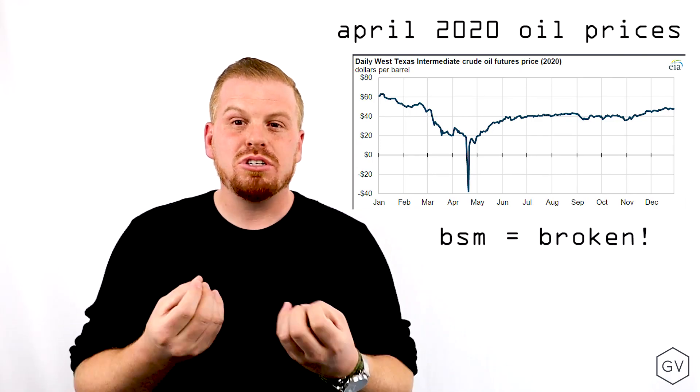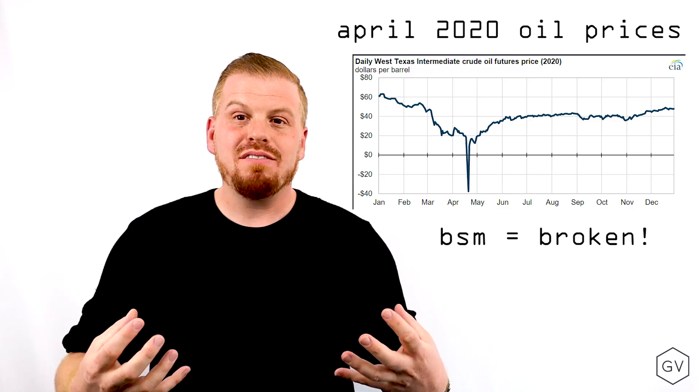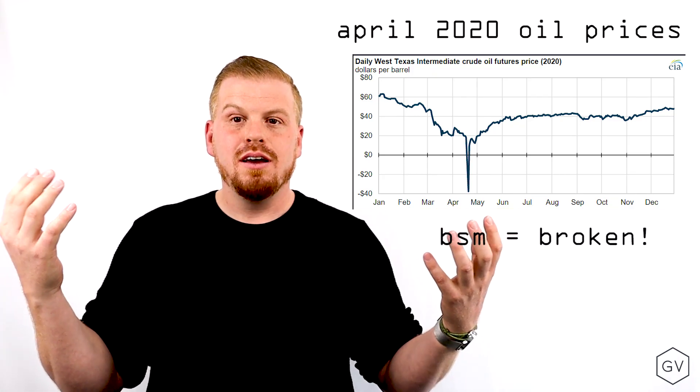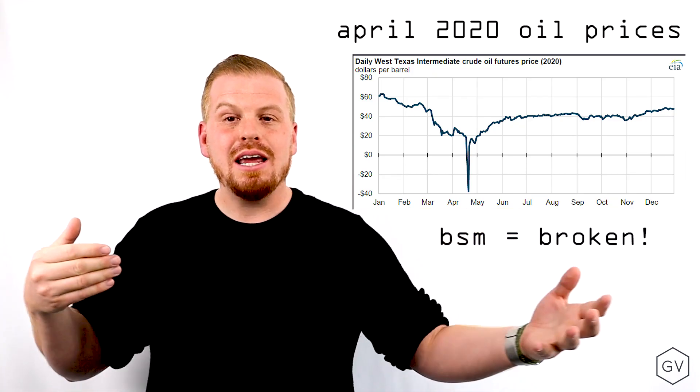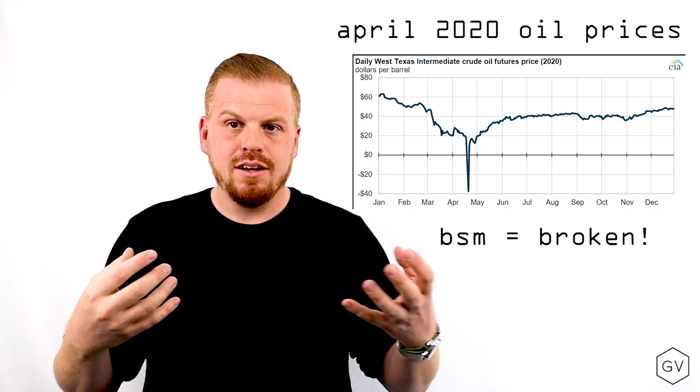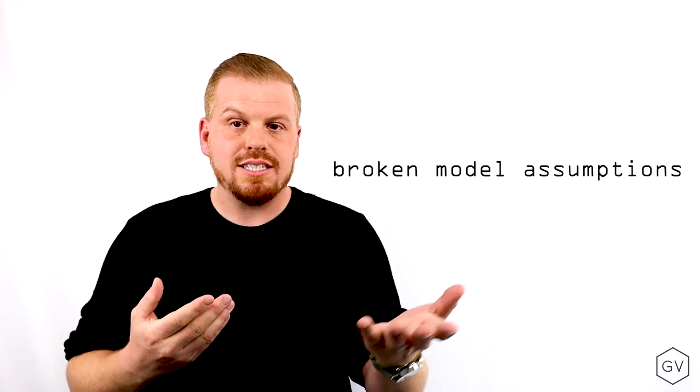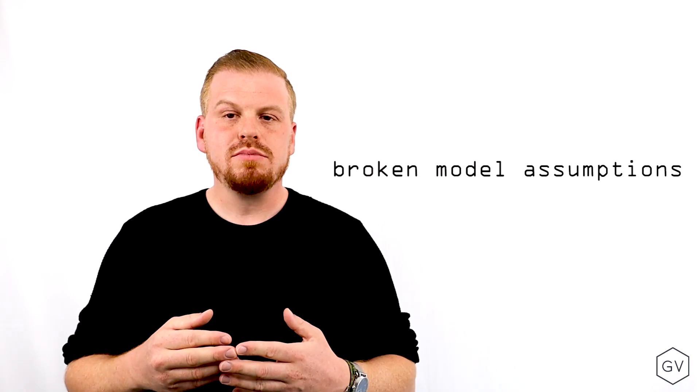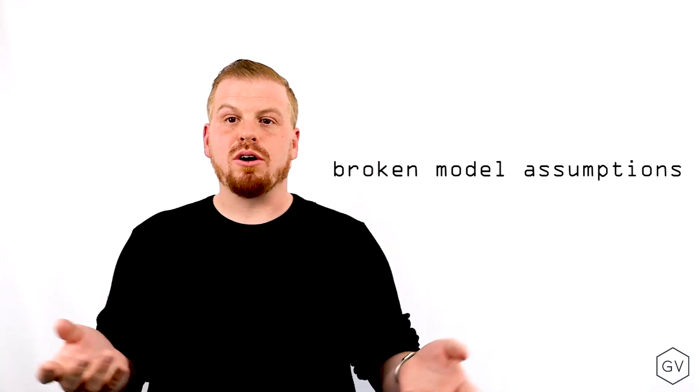And as prices approached zero, the implied volatility went crazy because no matter how high implied volatility went, the model assumes that the price can't go below zero. And so the Black-Scholes model broke.